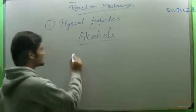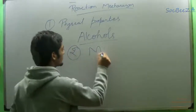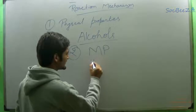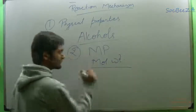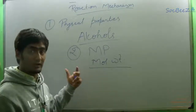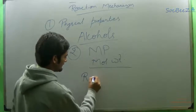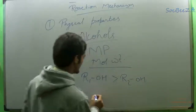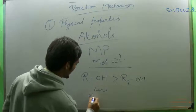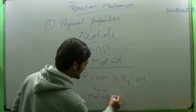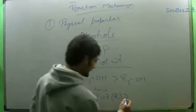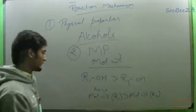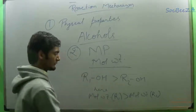The second point which we are going to discuss is melting point. Again, the melting point simply depends upon the molecular weight as stated earlier. So as the molecular weight of alcohol increases, the melting point will increase. If the molecular weight of R1-OH is more, it will have a higher melting point.